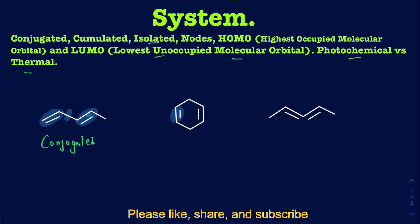Looking at the second example, there are two pi bonds, but they are separated by at least two sigma bonds. Whenever they are separated by more than one sigma bond, they are not going to be conjugated anymore — they're going to be isolated. The third type has double bonds right next to one another with no sigma bond separation. Those are your accumulated alkenes or accumulated dienes, also called allenes. Allenes are not very stable, but they do exist — a good example is carbon dioxide, which has accumulated double bonds with oxygen.